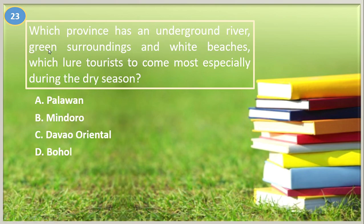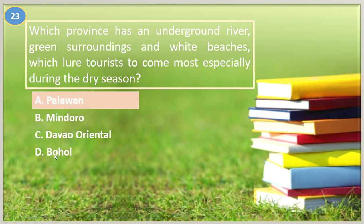Number twenty-three. Which province has an underground river, green surroundings, and white beaches, which lure tourists especially during the dry season? A. Palawan, B. Mindoro, C. Davao Oriental, D. Bohol. The answer is letter A, Palawan.